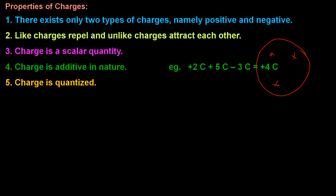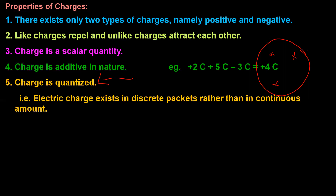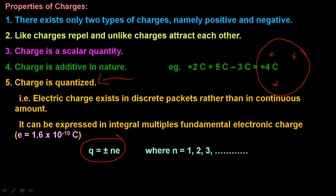This property is called Quantization of Charge. Charge exists in discrete packets of electrons. The mathematical expression is Q = Ne, where N can have only integral values — 1, 2, 3, etc. It must be an integral multiple of the electronic charge.